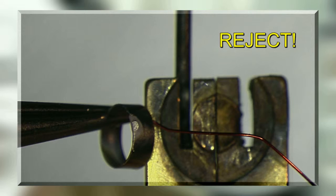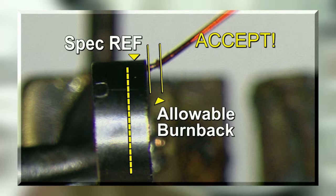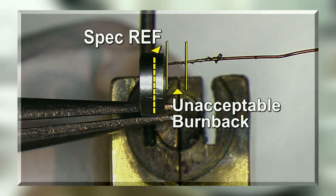Scrap the part if there is braze paste on the outside surface of the ring. Ensure the wire insulation was not melted away or burned back more than half the height of the ring. This shows an acceptable level of burn back.